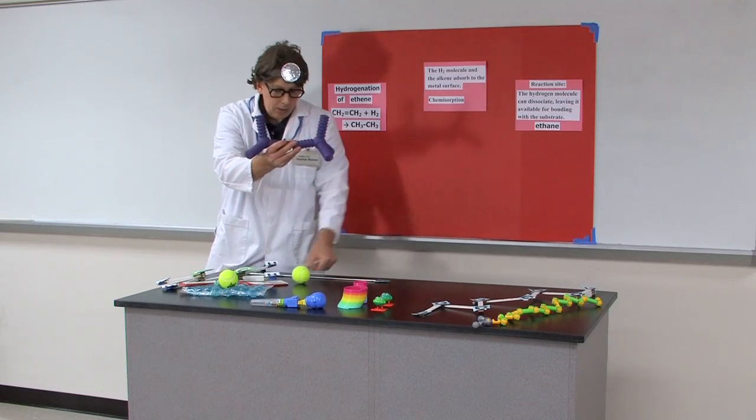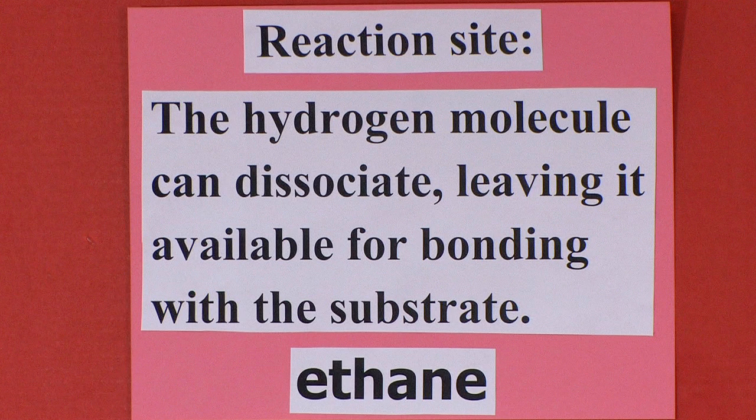So we see here, at the reaction site, the hydrogen molecule can dissociate, leaving it available for bonding with the substrate to form the ethane molecule.